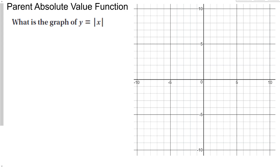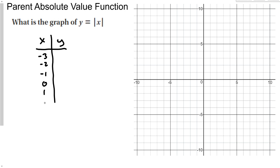Let's start by looking at the parent absolute value function. Starting with y equals the absolute value of x, any time I want to make a graph and I'm not sure what it looks like, I'm going to make a table. Let's plug in negative 3, negative 2, negative 1, 0, 1, 2, and 3 into my function. If I plug negative 3 in for x, the absolute value of negative 3 is positive 3.